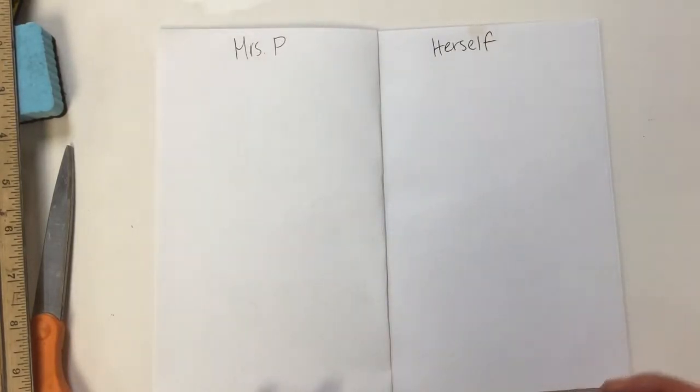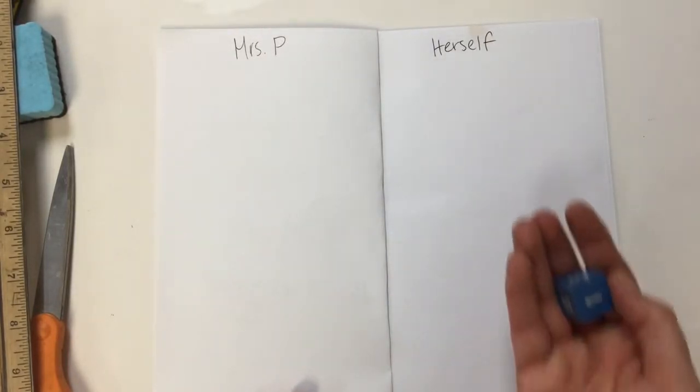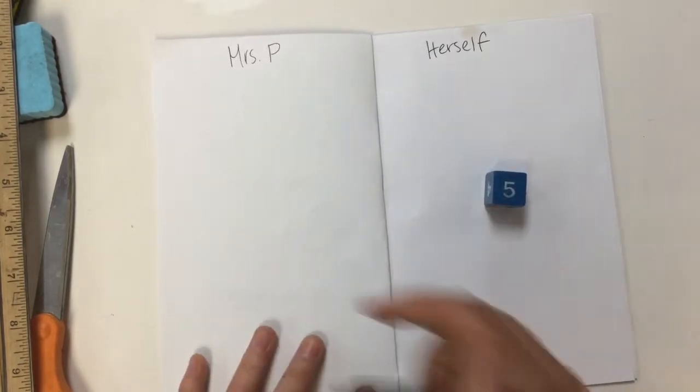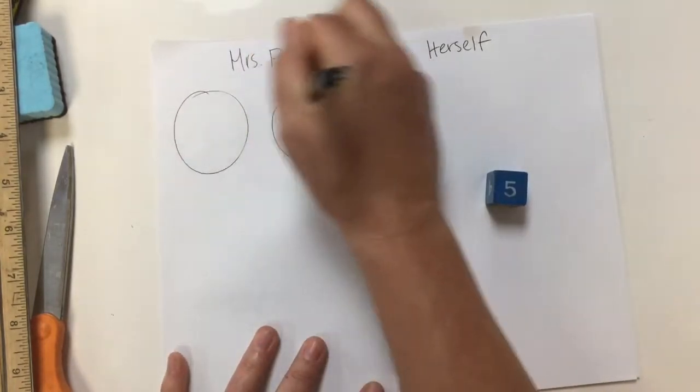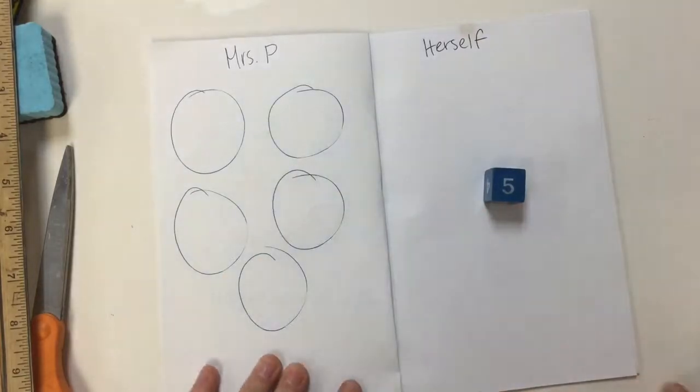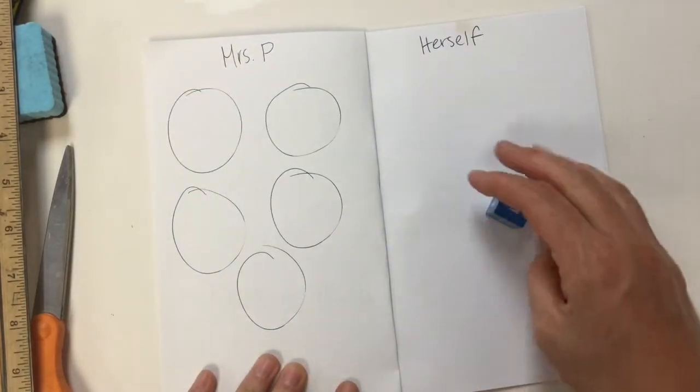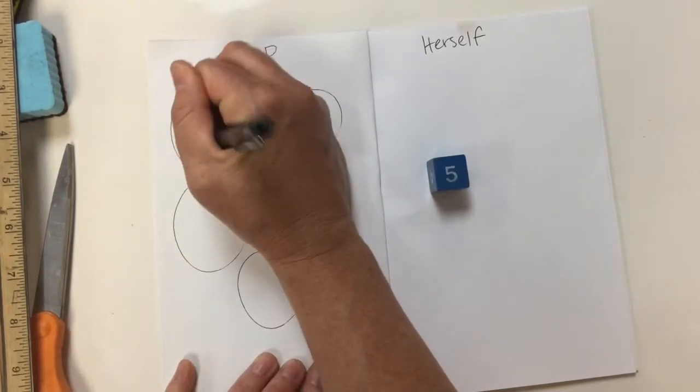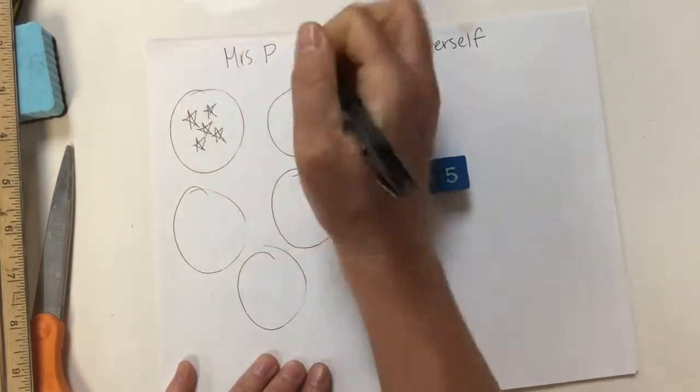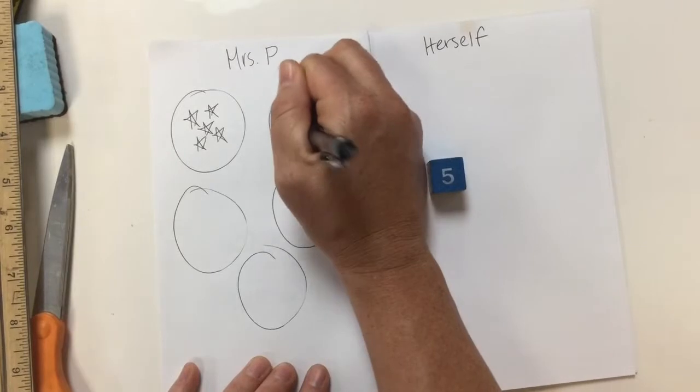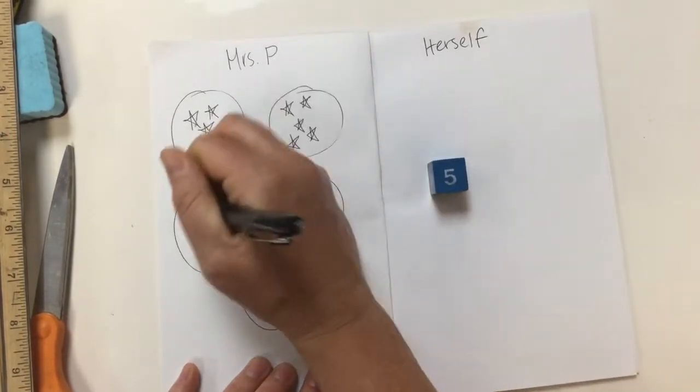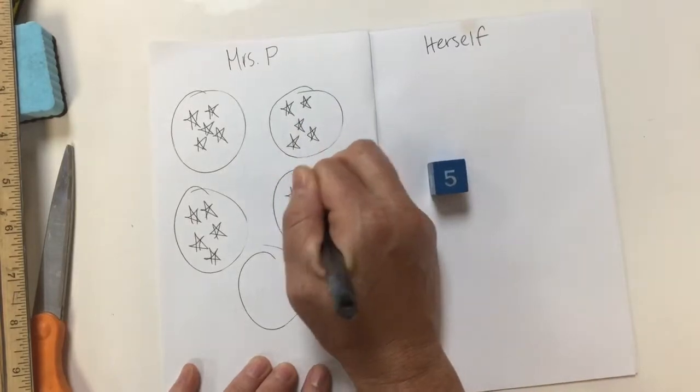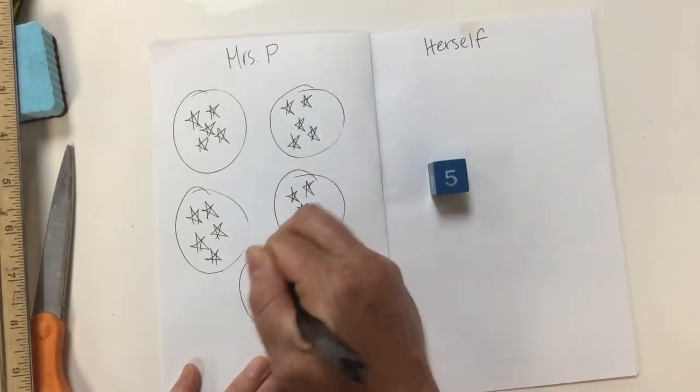So what you do is each turn that you have you roll the dice twice. First time is the number of circles you draw on your paper. Then you roll the dice again. And the second number is the number of stars you put in each circle. The word each is really important for multiplication.